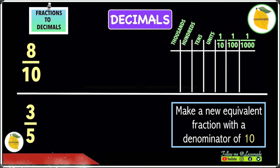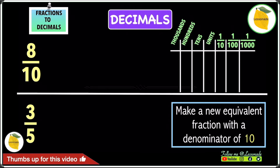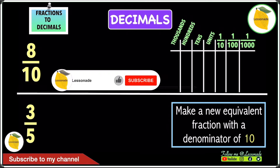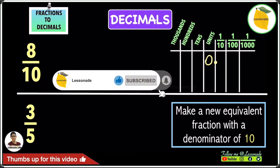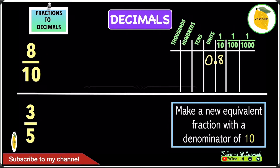In the first example we have 8 over 10. This has a denominator of 10 and we're going to convert this using a place value table. To convert 8 over 10 into a decimal, we first check for any whole numbers. Since 8 over 10 has no whole numbers, we put a 0 in the units column. Then, since the 8 is in the tenths column, the answer is 0.8.